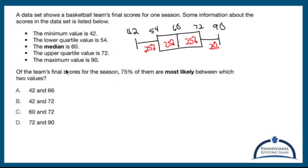Of the team's final scores for the season, 75% of them are most likely between which two values? If you're going to have 75% of your data in between two values, it's got to be in between 42 and 72, or it's got to be in between 54 and 90.